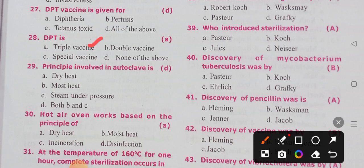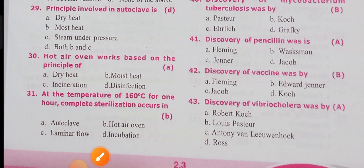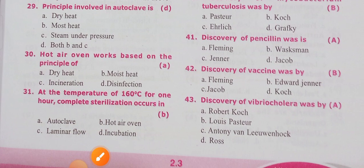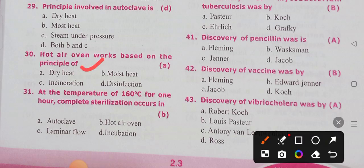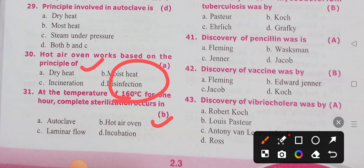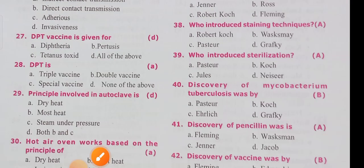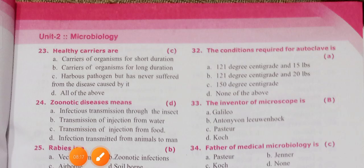The principle involved in autoclave is moist heat and steam under pressure — 121 degrees Centigrade for 15 minutes, option D both B and C. Hot air oven works on the principle of dry heat at 160 degrees Centigrade for one hour. The condition required for autoclave is 121 degrees — option A.